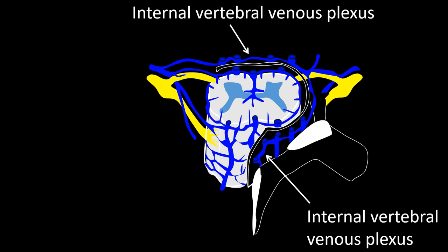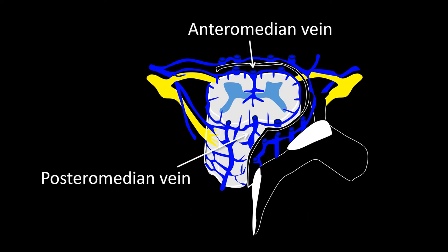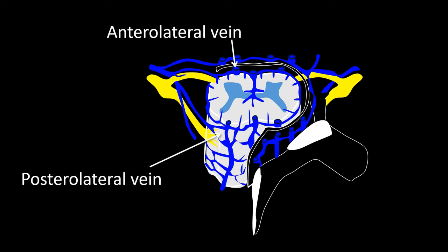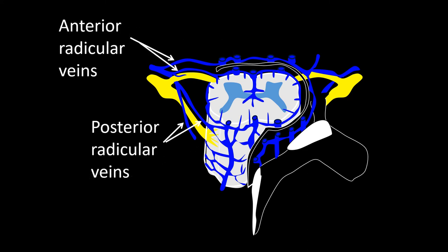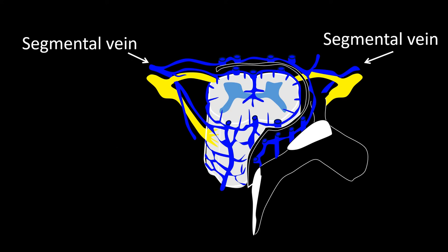In the epidural space we find the internal vertebral venous system — a plexus in the form of a ring outside the dura in the epidural space, called internal because it is inside the vertebral canal. Inside the dura, hugging the spinal cord, six vessels anchor the inner ring: the anterior and posterior median veins, and the four anterolateral and posterolateral veins. The epidural ring and the spinal cord ring drain by the anterior and posterior radicular veins to the segmental veins, and from there to the general circulation. Thank you very much for your attention.